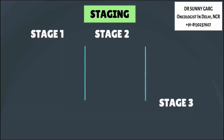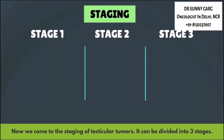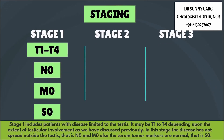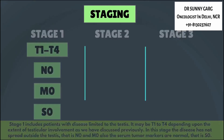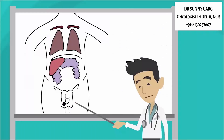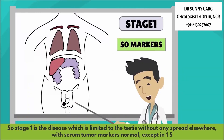Now we come to the staging for testicular tumors, which can be divided into three stages. Stage 1 includes patients with the disease limited to the testes, ranging from T1 to T4 depending on the extent of testicular involvement. The disease has not spread outside the testes — that is, it is N0 and M0 — and the serum tumor markers are normal (S0). Rarely, the tumor markers may be elevated in stage 1, when it is called stage 1S.